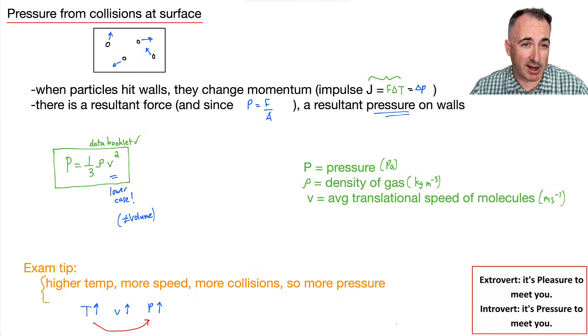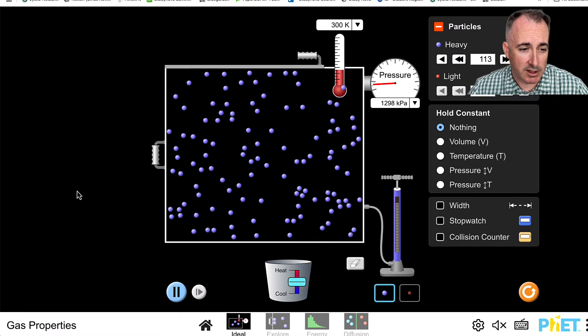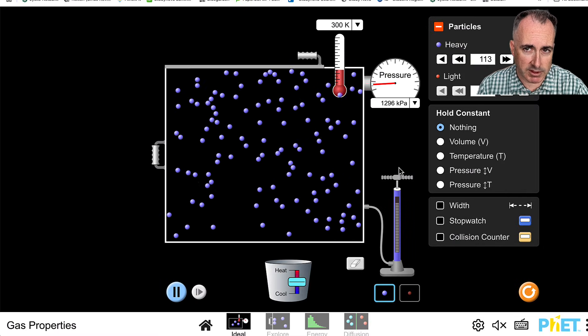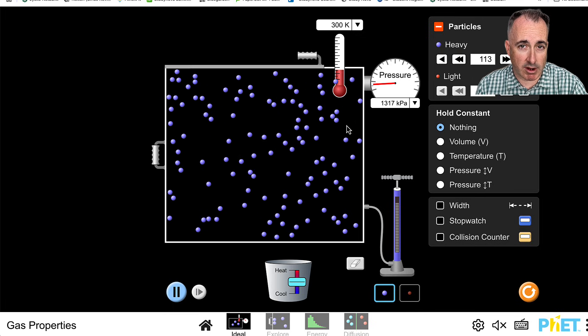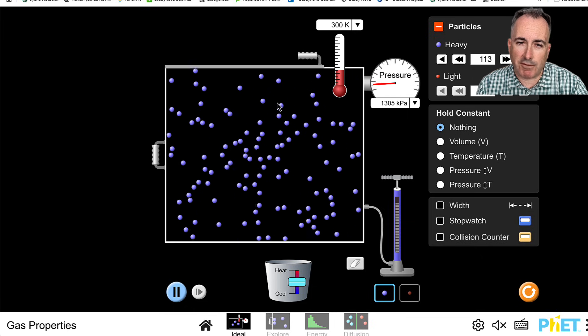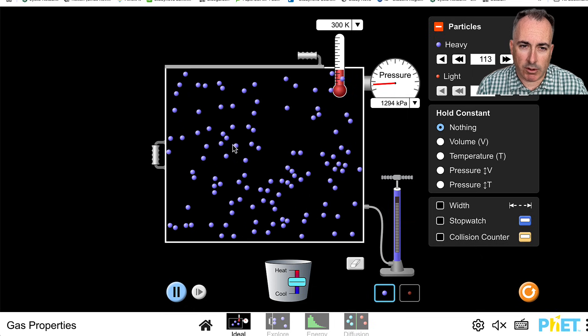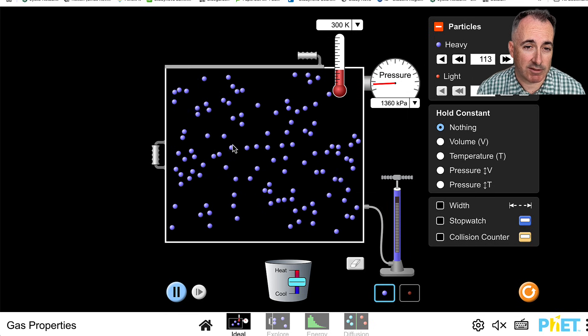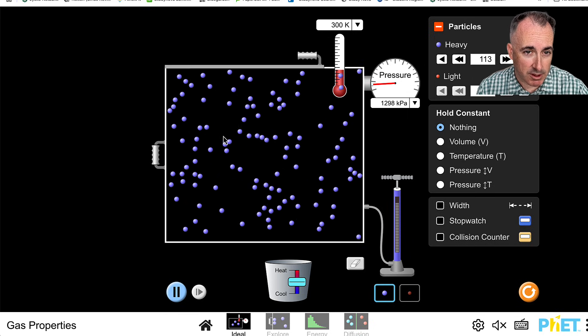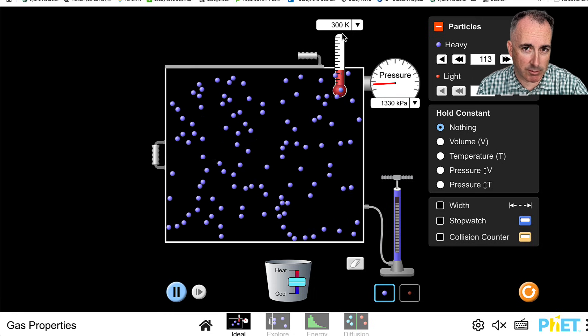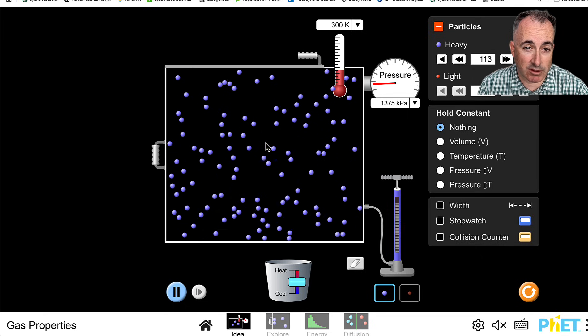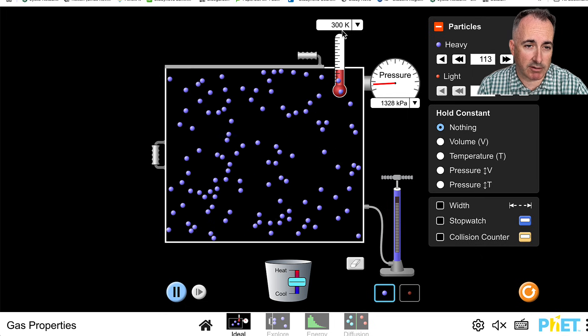So let's actually look at this with an animation from PHET. The gas properties one. I've already put in some molecules here, some heavy particles, just bouncing around. You can see the temperature is 300 Kelvin, and we've got a certain pressure right here. First of all, notice that it's about the average kinetic energy of these molecules. Do you notice some of them are going faster than others? But the average is going to tell us the temperature. Some are going slow, some are going faster, but the average will be such that it's 300 Kelvin.